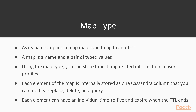In Cassandra we can also have a map type. As the name implies, a map maps one thing to another — it is a named pair of typed values. Using the map type you can store timestamp-related information in user profiles. Each element of the map is internally stored as one Cassandra column that you can modify, replace, delete, and query.